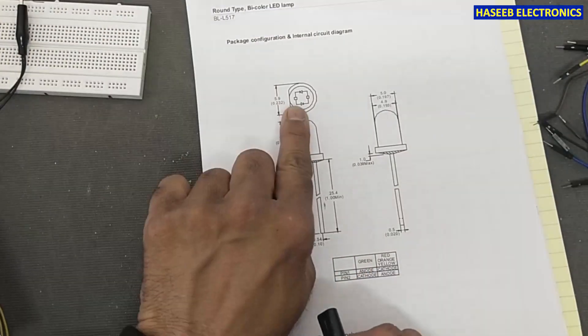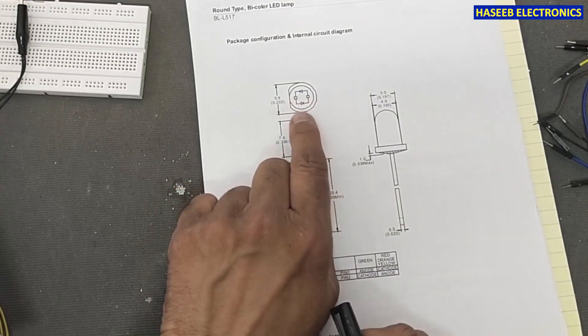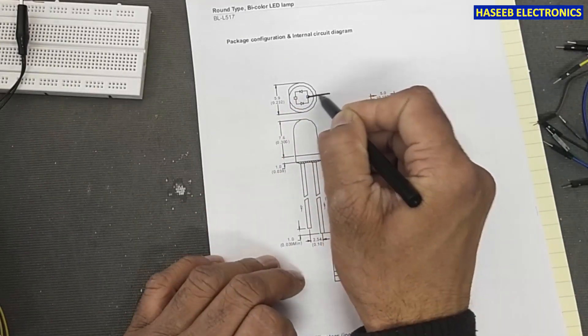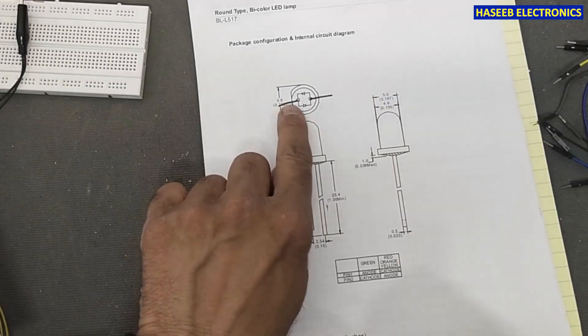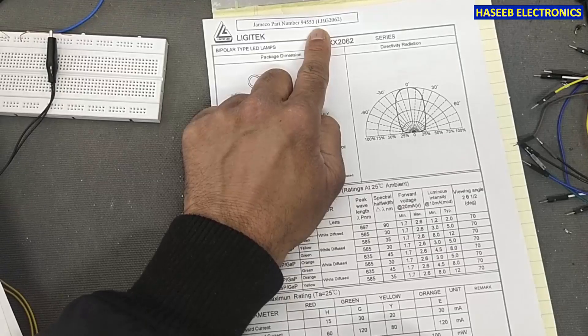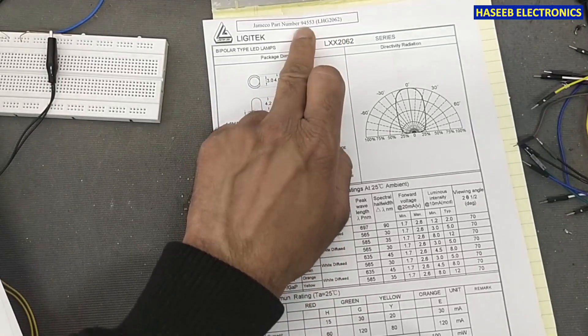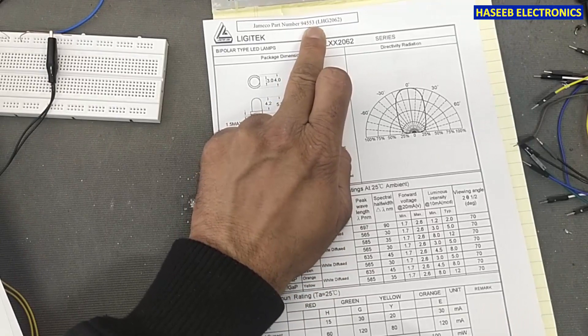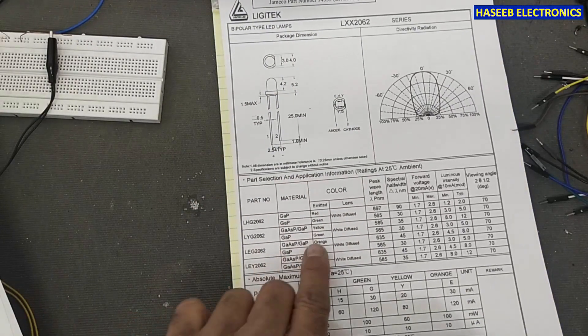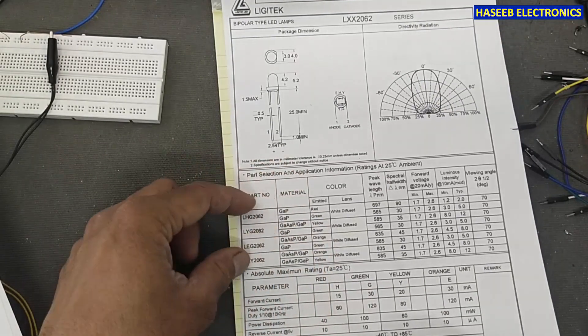Here is the pinout. One LED is in this direction, the second LED is in this direction, and these are the output terminals and these are the connections, the leads. It has just only two leads. And if you see this LHG2062 series or 94553 part number, JEMCO part number, it also has red and green, yellow and green, orange-yellow, these different part numbers.